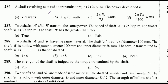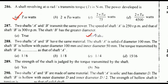A shaft revolving at ω radians per second transmits torque T in Newton-meters — the power developed is option A: T × ω watts. Two shafts A and B transmit the same power; speed of shaft A is 250 rpm and shaft B is 300 rpm — shaft B has the greater diameter. Options: true or false. The correct answer is option B: false.